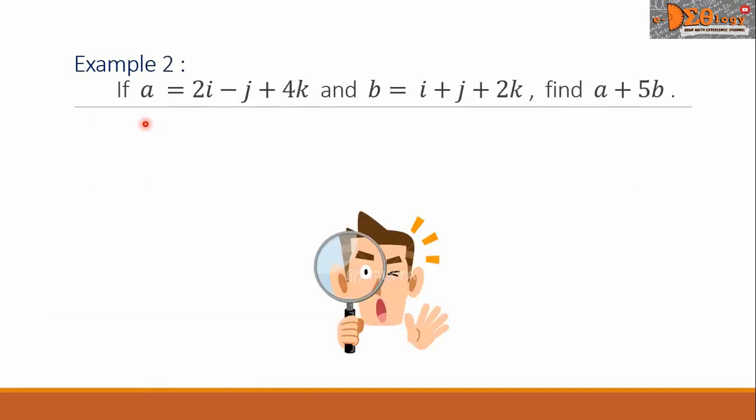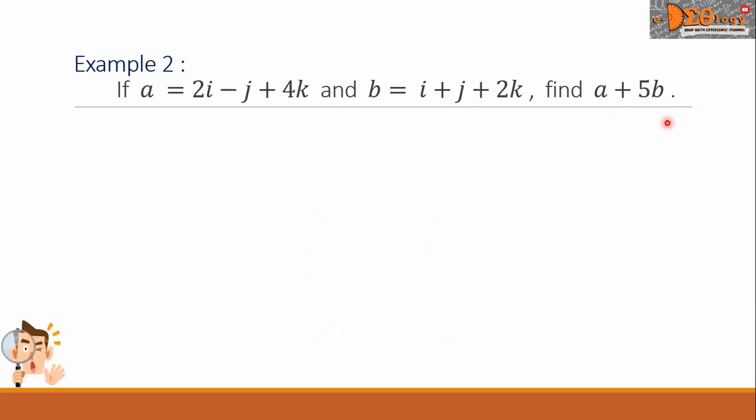Example 2. If a equals 2i minus j plus 4k and b equals i plus j plus 2k, find a plus 5b. Let us list the corresponding vectors here. Then, our goal is to evaluate a plus 5b.